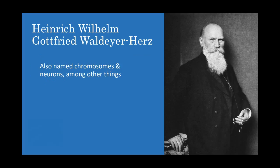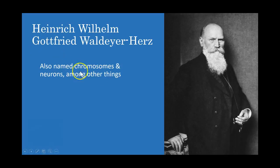But it turns out that's not actually true. I did a little research with the help of some friends at the Human Anatomy and Physiology Society, and it turns out plasma cells were named by Heinrich Wilhelm Gottfried Waldeyer-Hartz — there's actually even a 'von' in there to make it longer. He was very prolific in the field of anatomy in the mid-1800s: he named the chromosomes, he developed neuron theory, he named neurons, and many other things.